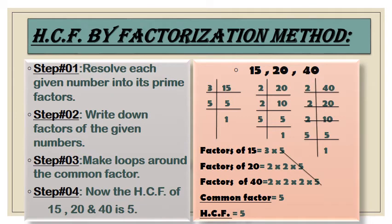First I will explain HCF by factorization method. Let us take three numbers: 15, 20, and 40. Break them into their prime factors. In the first step, resolve each given number into its prime factors. For 15, we first try 2 as a prime number, but 15 is not divisible by 2, so we take 3. So 3 × 5 = 15.